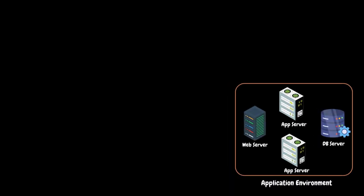Let's imagine we have a three-tier architecture with one web server, two app servers, and one database server. Our application is deployed in this environment and it is handling user requests. We need to ensure that the application is working as per expectation. Without monitoring, we wouldn't know how it is performing or if there are any issues. To ensure it performs well, we need to monitor the environment and proactively fix any issues. This helps us avoid user impact and provide a better user experience. So let's consider Dynatrace as a monitoring solution.